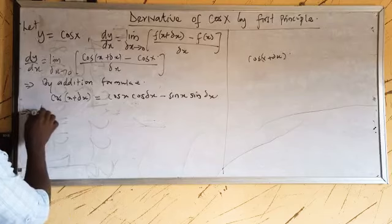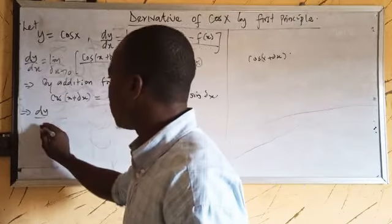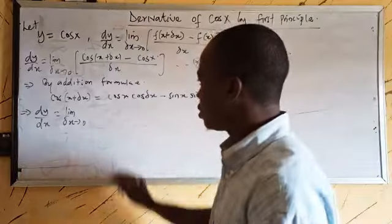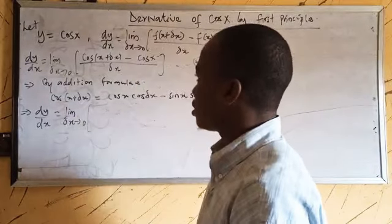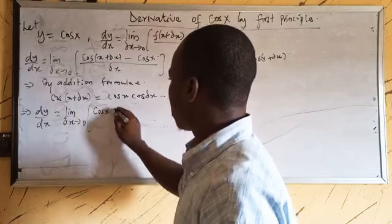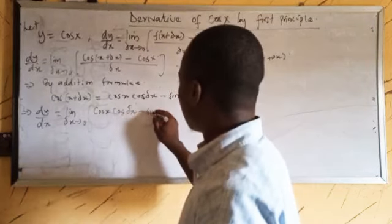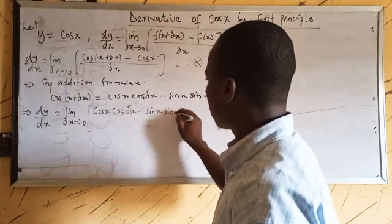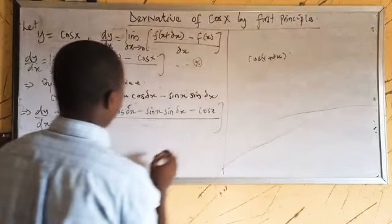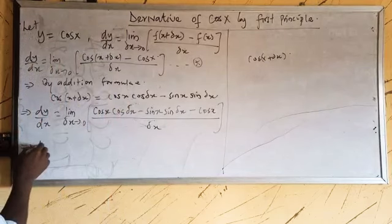We now employ this result into our equation. Taking the limit as Δx tends to zero, we plug in the expansion: cos x · cos(Δx) minus sin x · sin(Δx), then subtract cos x, all divided by Δx.